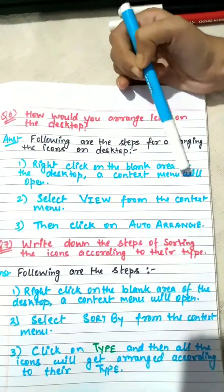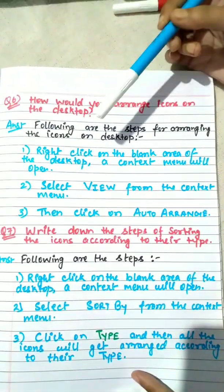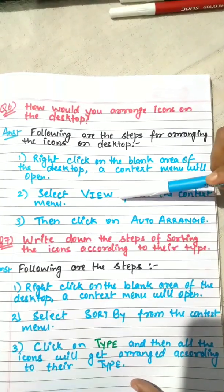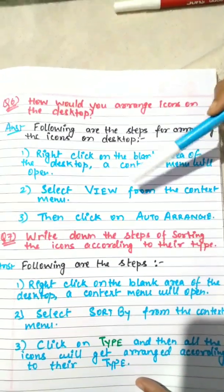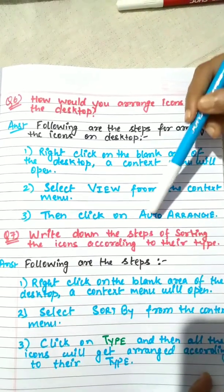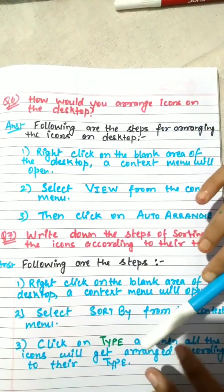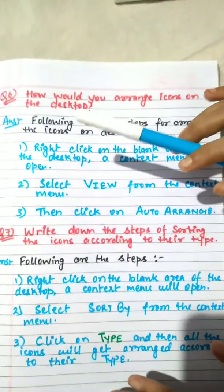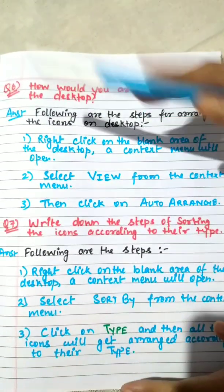From that context menu kids, we will select the view option. And then from the view option we will select the auto arrange option. After clicking on auto arrange, all the icons that are not arranged in your desktop will get arranged automatically in a perfect line.